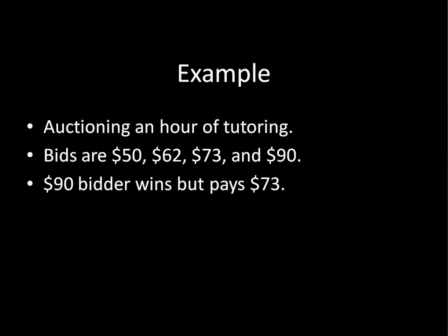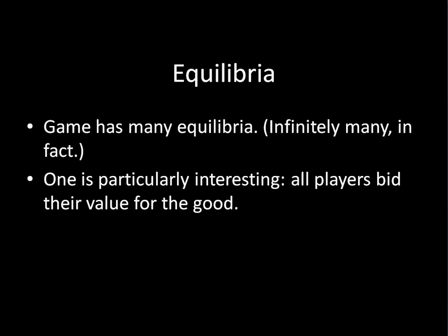This game has a ton of equilibria, but one equilibrium in particular is way cooler than the others: the equilibrium where all players bid their actual value for the good. In the tutoring example, each bidder thinks to themselves how much they value one hour's worth of tutoring from William Spaniel, writes down that price, and gives it to the auctioneer. They're writing down the truthful value of how much they value the tutoring.